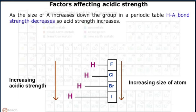As the size of A increases down the group in a periodic table, H-A bond strength decreases, so acidic strength increases.